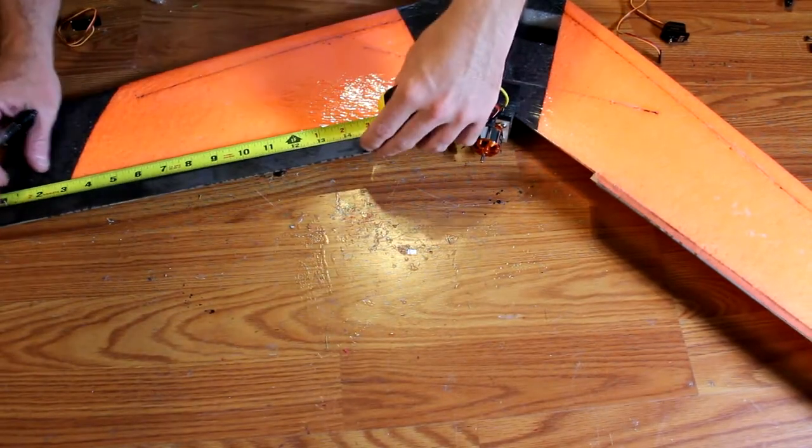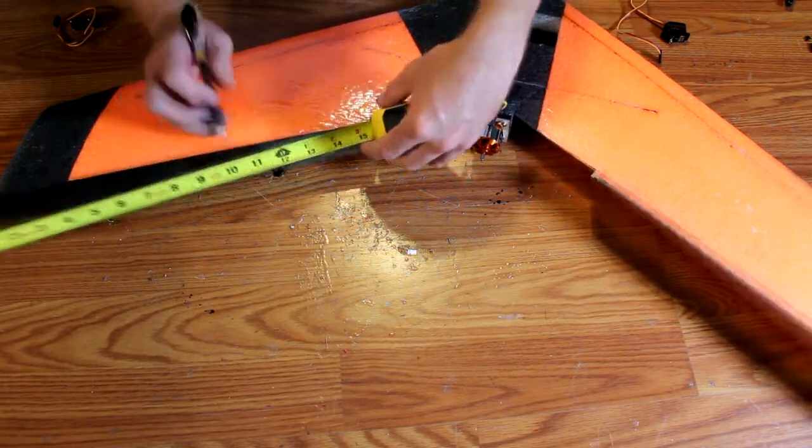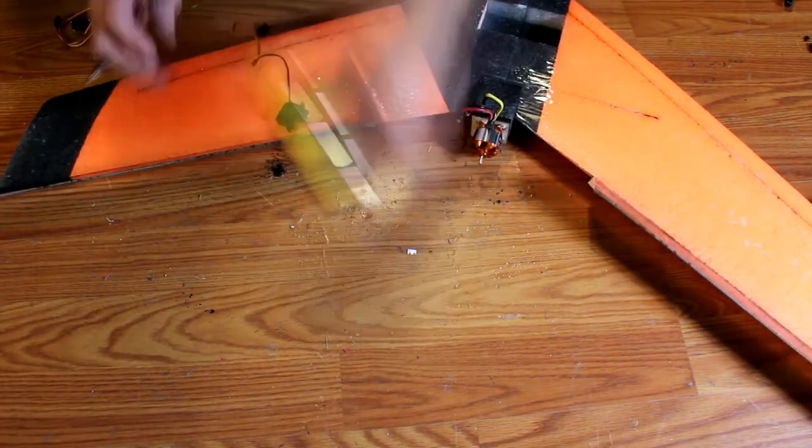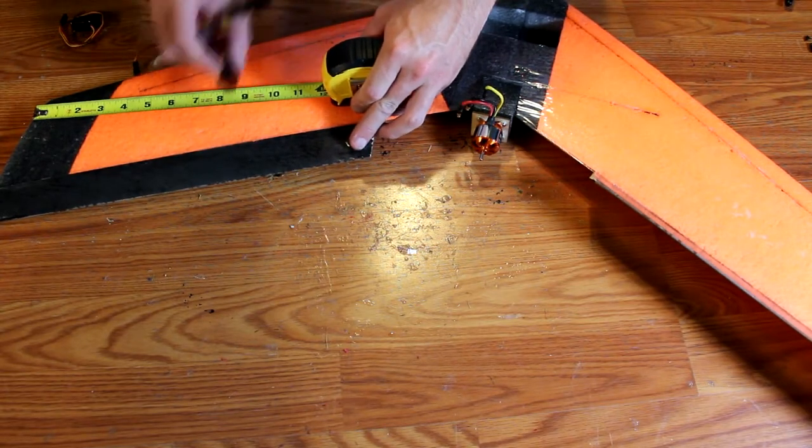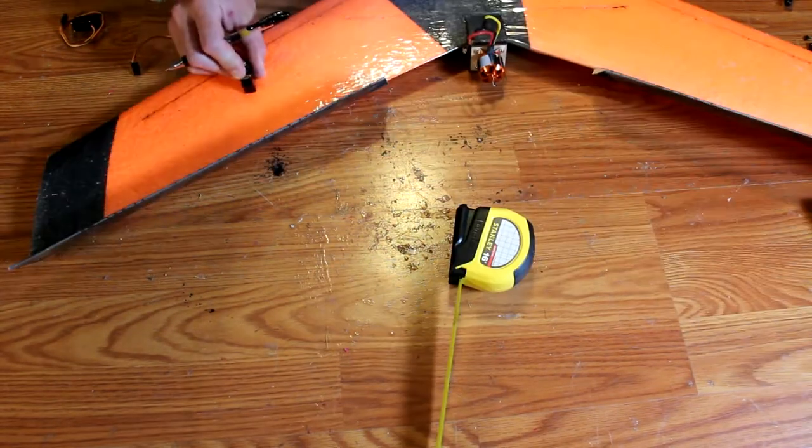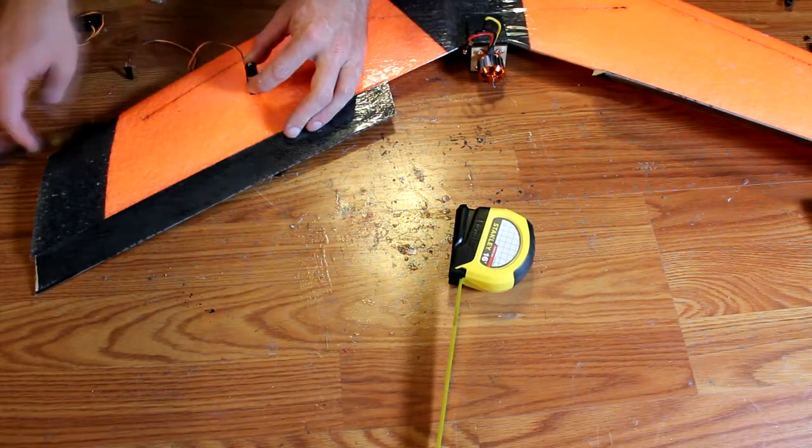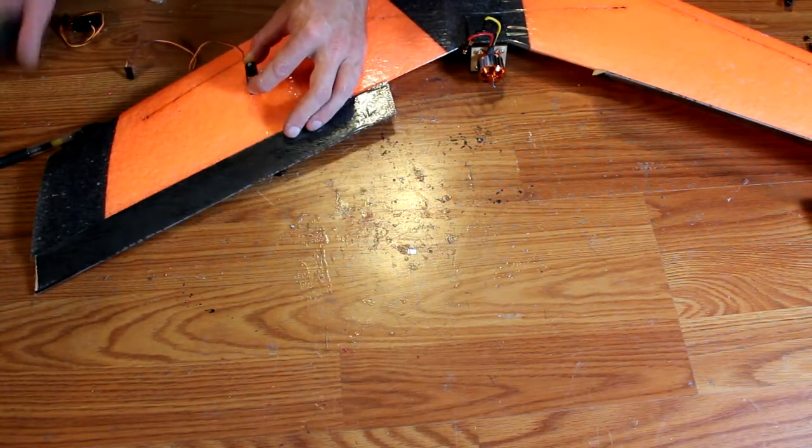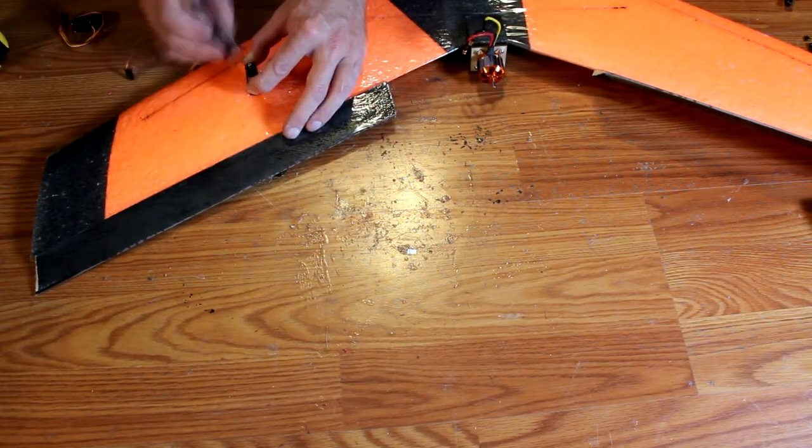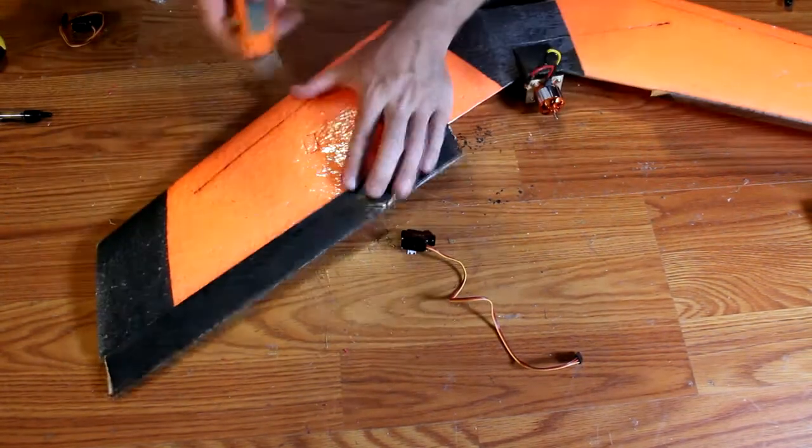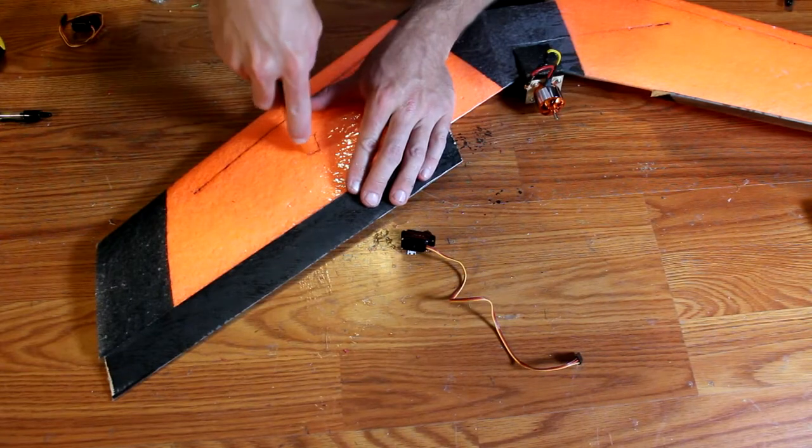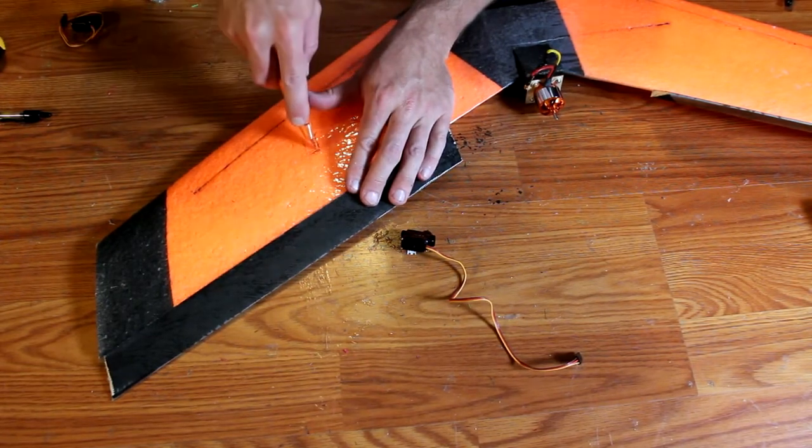Next, put your servos in. I'm moving mine approximately 10 inches down and 5 inches into the wing from the rear. The location is up to you, but I highly recommend going closer to the middle of the elevon rather than the edge. The reason for this is mounting towards the edge of the elevon can cause flutter at high speeds.